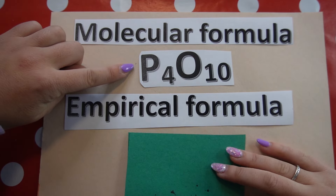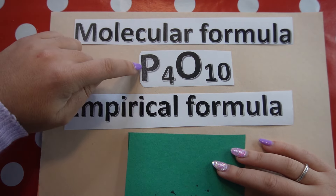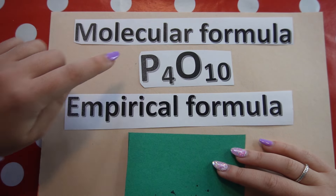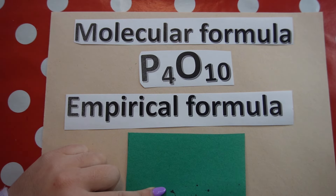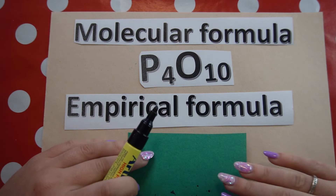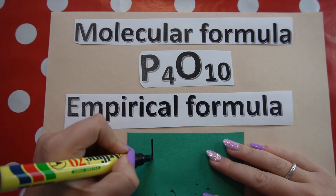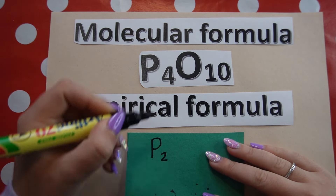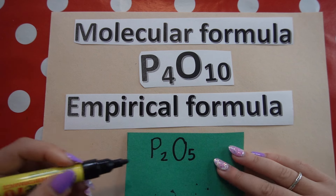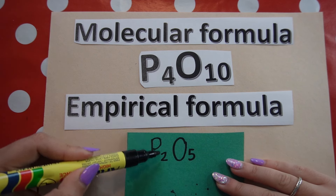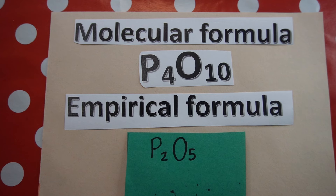The proper definition of empirical formula is: the simplest whole number ratio of atoms within a compound. For example, given the molecular formula P₄O₁₀, I need to find the empirical formula by simplifying the 4 to 10 ratio. The biggest number that divides into both 4 and 10 without a remainder is 2. Dividing gives P₂O₅. We can't simplify that any further, so the empirical formula is P₂O₅ — it's just the simplest version of the formula.